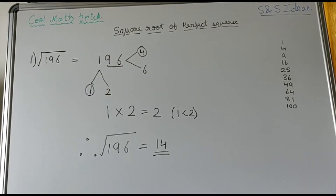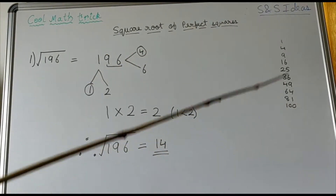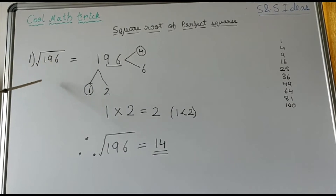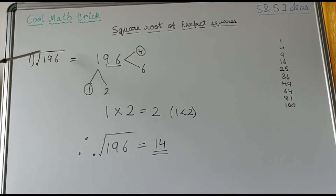First, let us write the square numbers from 1 to 10. Here is our question: what is the square root of 196?